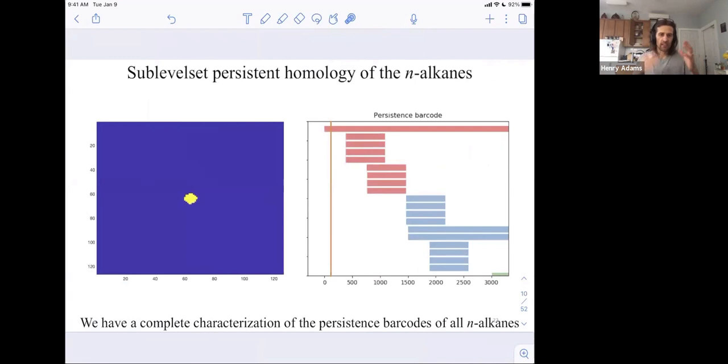So we get this increasing sequence of spaces as the yellow region beneath our energy threshold grows. And whenever you have an increasing sequence of spaces you can compute the persistent homology.